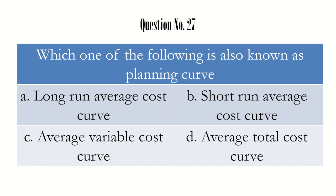Question number 27: which of the following is also known as the planning curve? This is a knowledge-based question. The long-run average cost curve is also called the planning curve. If you remember the diagram, the LRAC curve has that characteristic envelope shape, and its other name is the planning curve.